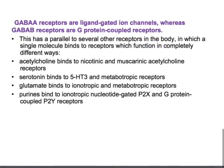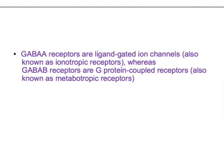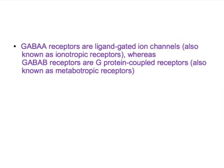For the GABA A receptor, activation causes an increase in chloride influx — that's very important. For the GABA B receptor, activation increases potassium efflux. Remember: efflux means going out of the cell, influx means coming into the cell. So GABA A increases chloride influx, whereas GABA B increases potassium efflux, kicking potassium out of the cell.